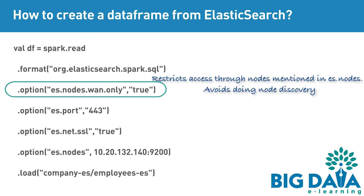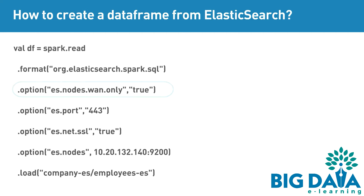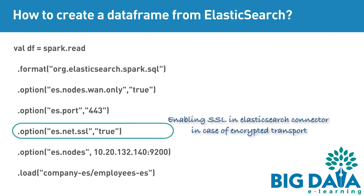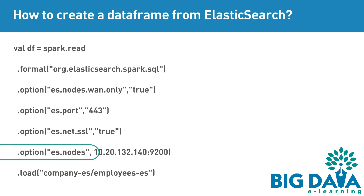es.nodes.one.only needs to be set as true. es.port needs to be set as 443. es.net.ssl needs to be set as true. es.nodes needs to be set as the host-name colon port-no.